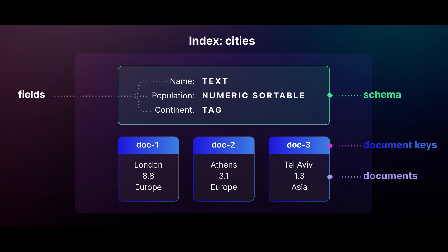Besides that, Dragonfly also natively supports complex data types like JSON and search indexes without additional modules or extensions. It can also run in memcached mode if that's what you need.